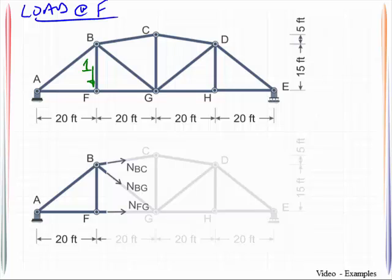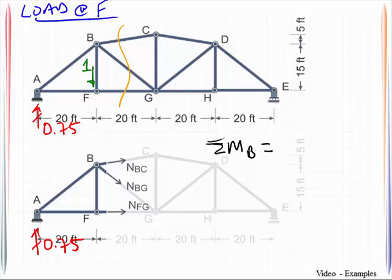Remember, I will sum moments about point E to get this reaction. Then I will sum moments about point B on this free body diagram after I made the cut right through here. Sum moments about B, and that will give me NFG is equal to 1.